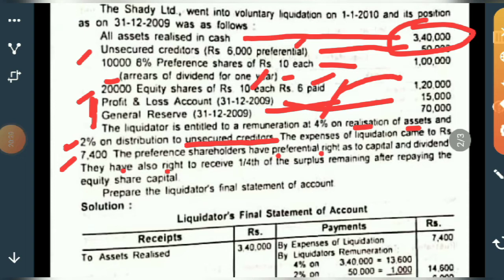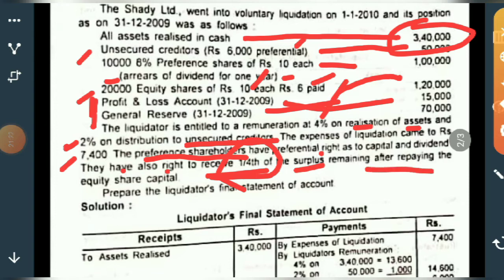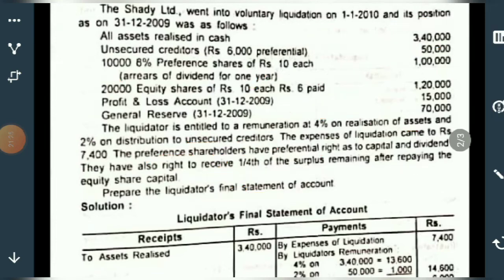The liquidator is entitled to a remuneration of 4% on realization of assets, and another commission of 2% on distribution to unsecured creditors. Expenses of liquidation are rupees 7,400. Preference shareholders have preferential rights. Importantly, preference shareholders also have the right to receive one-fourth of the surplus remaining after all distributions.